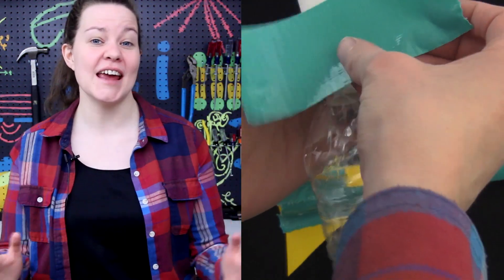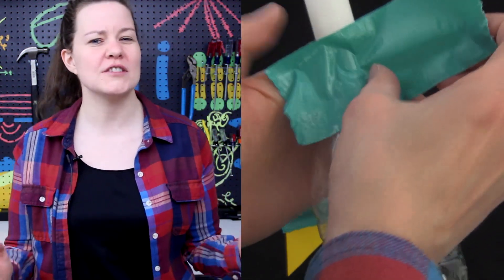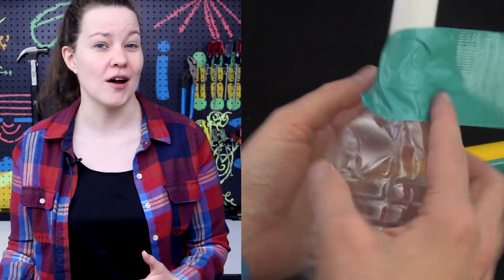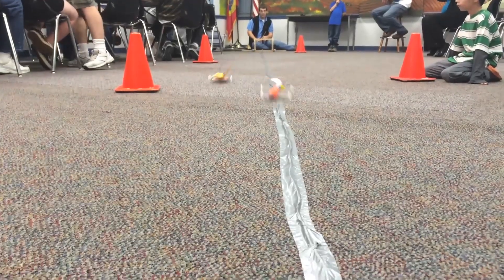Lastly, to make the rocket launcher, you need tape, PVC, or a piece of rolled-up paper. You tape this to the top of the water bottle. And remember, keep exploring!